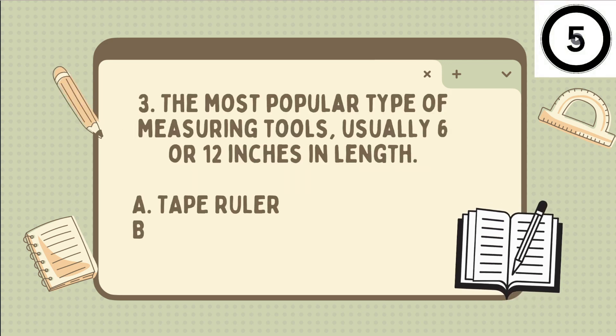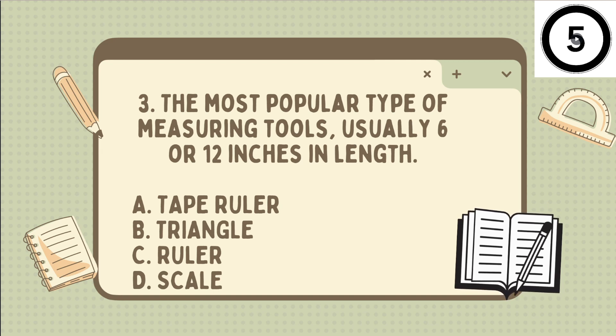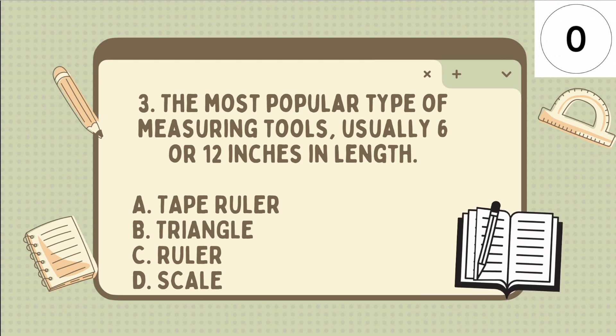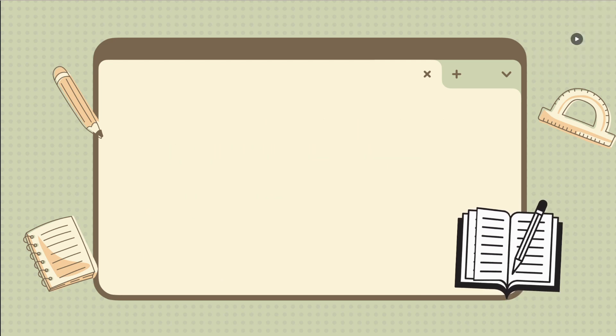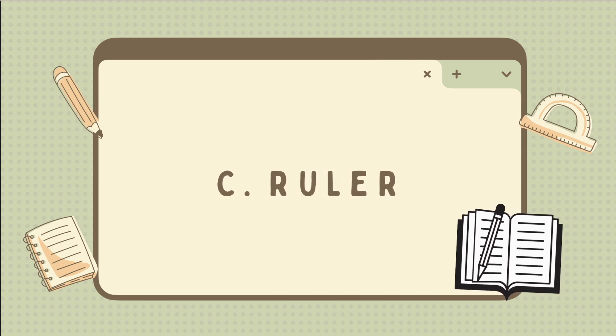Third one. The most popular type of measuring tools, usually 6 or 12 inches in length. Is it A. Tape ruler. B. Triangle. C. Ruler. D. Scale. All right. What's your guess? Very good. It's letter C. That's ruler.